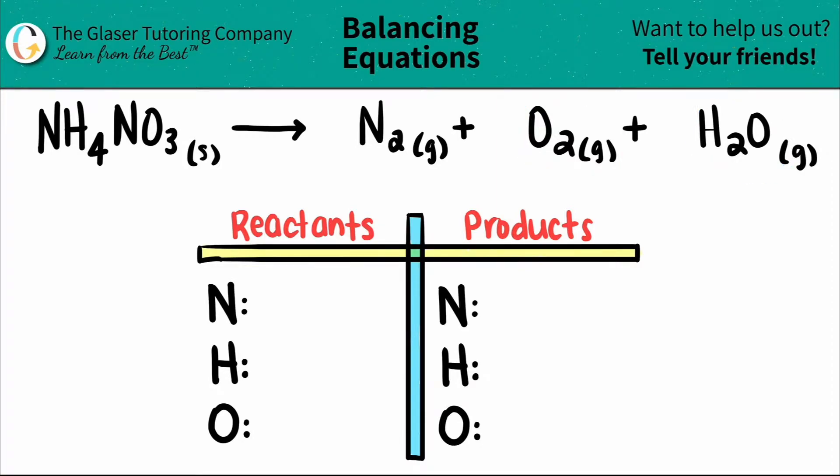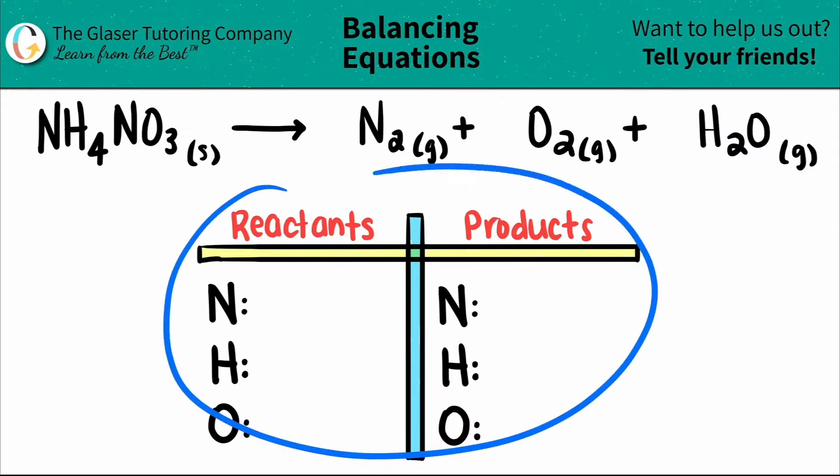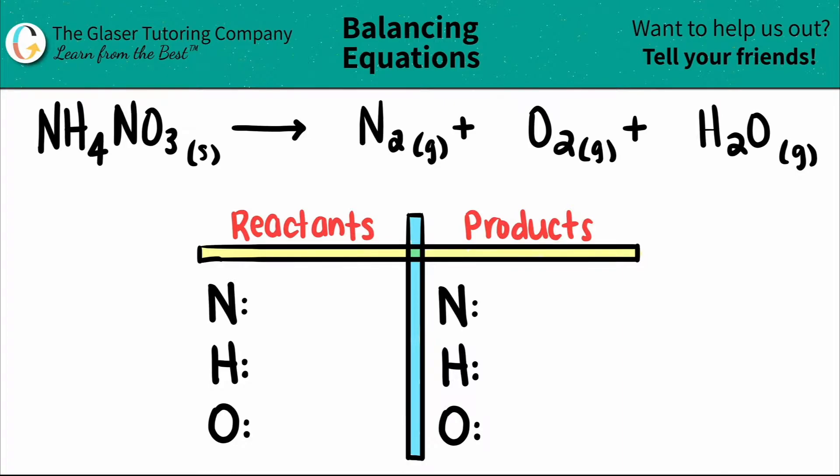I already wrote out a chart for you with the elements that I see on both the products and the reactant side. All we have to do is just write the numbers.